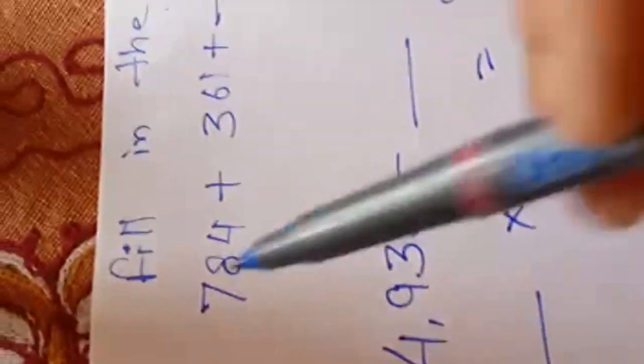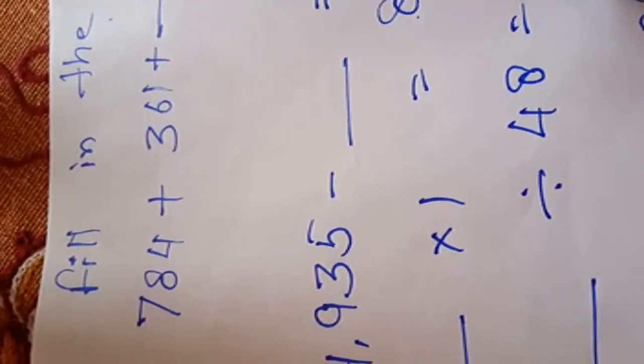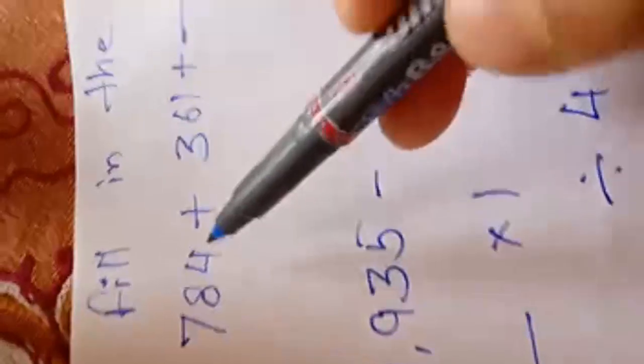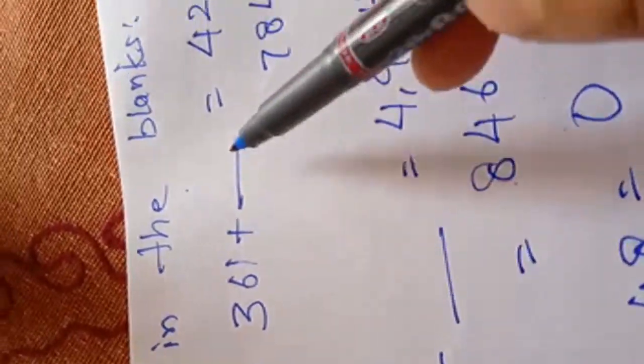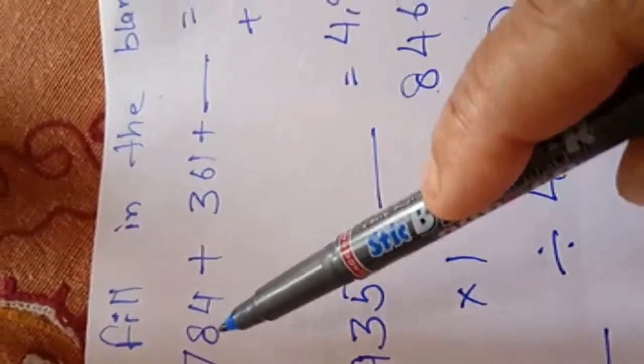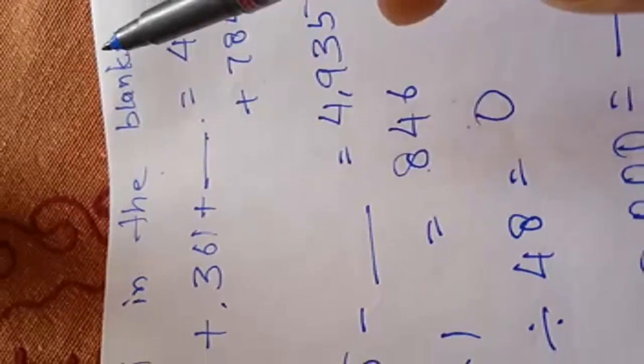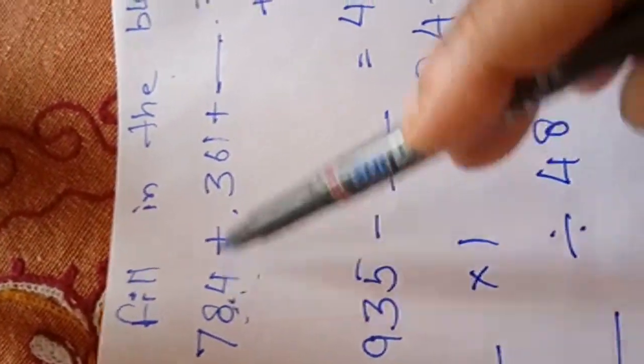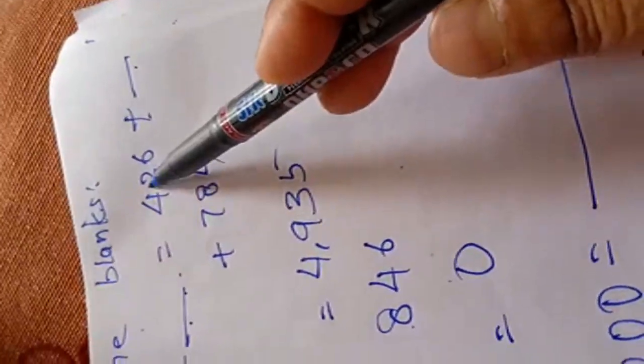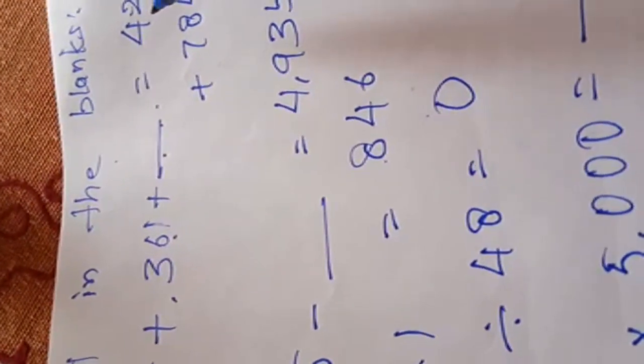Now, come to question number 8. You have learnt in the previous chapter some properties that if we change the order of the addends but the sum is same. Fill in the blanks. Here, in A, 784 plus 361 plus blank equals 426 plus blank plus 784. We have to see that the number of the addends in both left side and right side of the equal to will be equal. 3 addends are here and 3 addends are here. The addends will also be same and only the order may be changed.